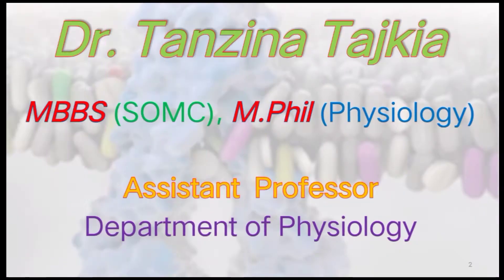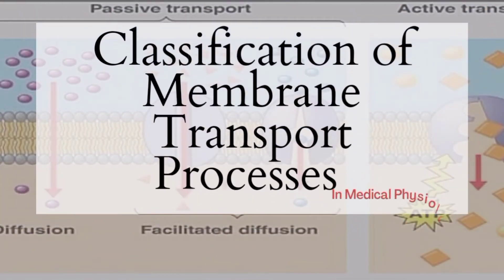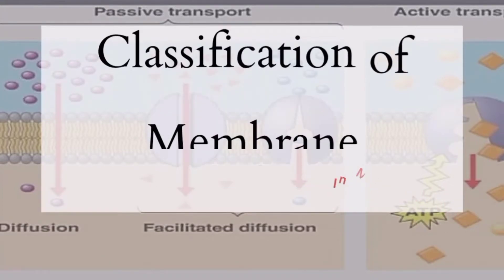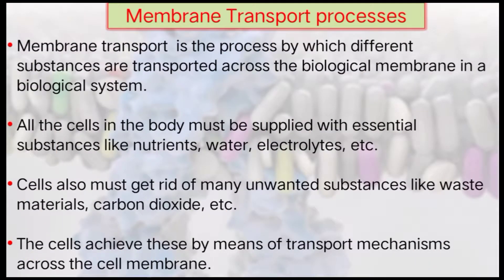Today's lecture is about the classification of membrane transport processes which occur across the cell membrane in our body. Membrane transport is the process by which different substances are transported across the biological membrane. In a biological system, all cells must be supplied with essential substances like nutrients, water, electrolytes, etc. Cells also must get rid of many unwanted substances like waste materials and carbon dioxide.